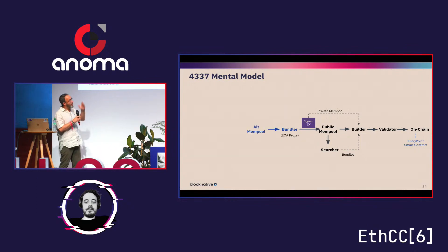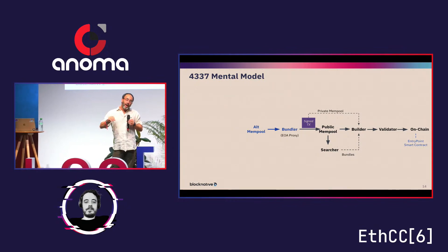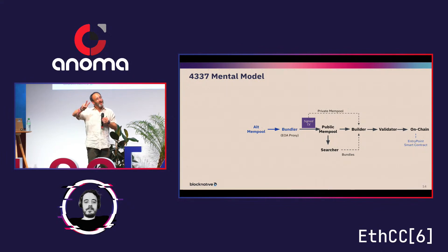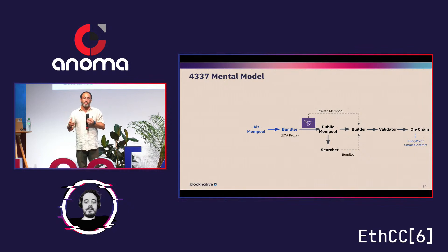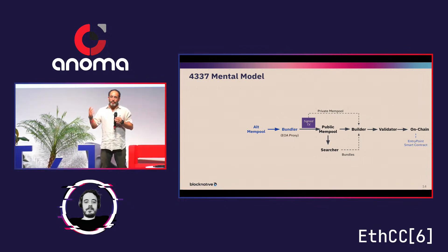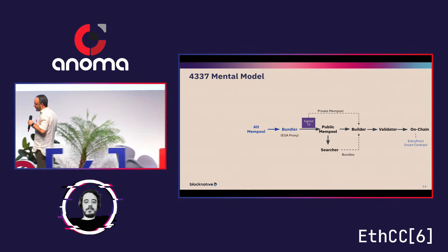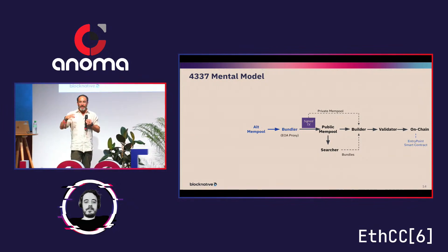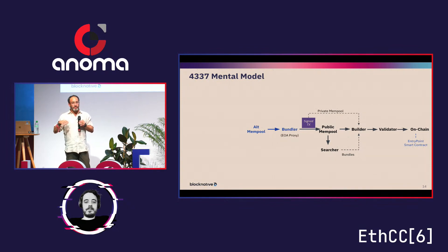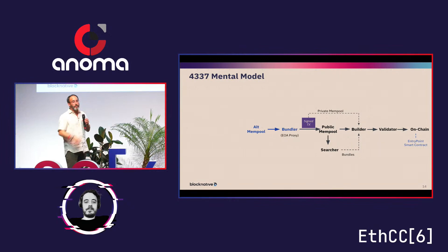The bundler receives user ops from the alt mempool — this is a massive change to the network. Today we enjoy a single public mempool, but we're moving into a network with two mempools — except 'alt mempool' is a misnomer, there may actually be many alt mempools. You'll have mempool fragmentation. Mempools are really significant — if on-chain data represents what happened, mempools are why it happened. All of MEV is in mempools.